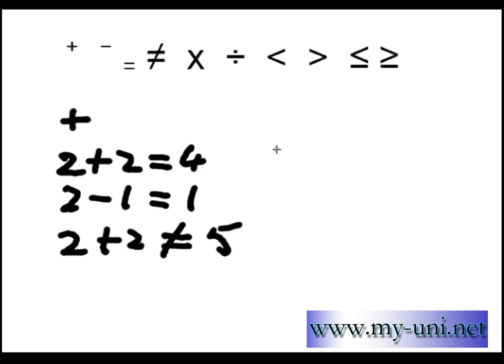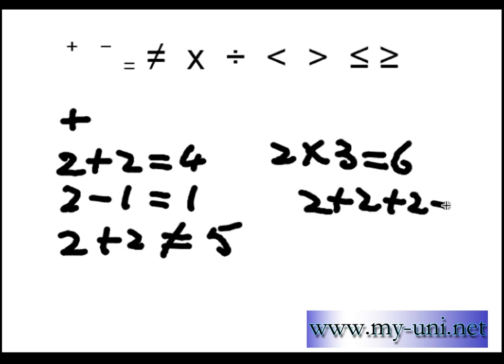This is a multiplication sign. 2 times 3 is equal to 6. What it also means is that 2 is added 3 times. So 2 plus 2 plus 2 is equal to 6.